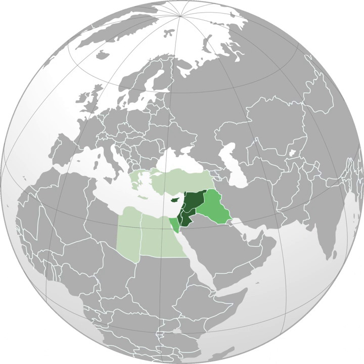Most populations in the Levant speak Levantine Arabic (Shami), usually classified as the varieties North Levantine Arabic in Lebanon, Syria, and parts of Turkey, and South Levantine Arabic in Palestine and Jordan. Each of these encompasses a spectrum of regional or urban and rural variations. In addition to the varieties normally grouped together as Levantine, a number of other varieties and dialects of Arabic are spoken in the Levant area, such as Levantine Bedawi Arabic and Mesopotamian Arabic.